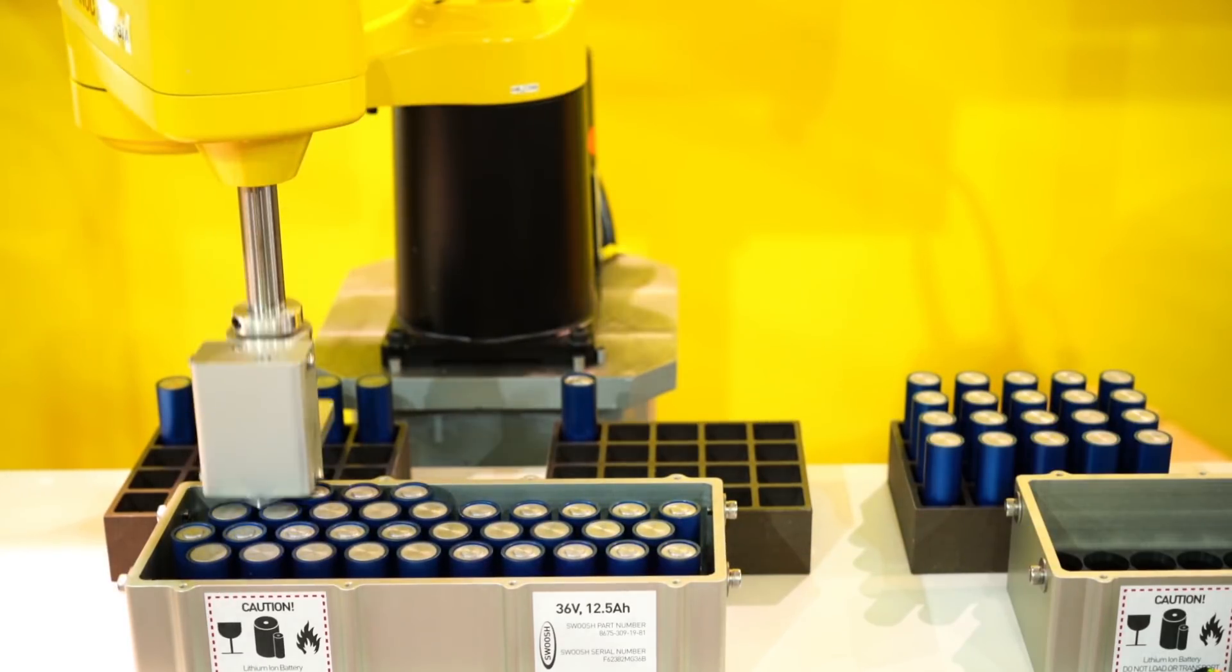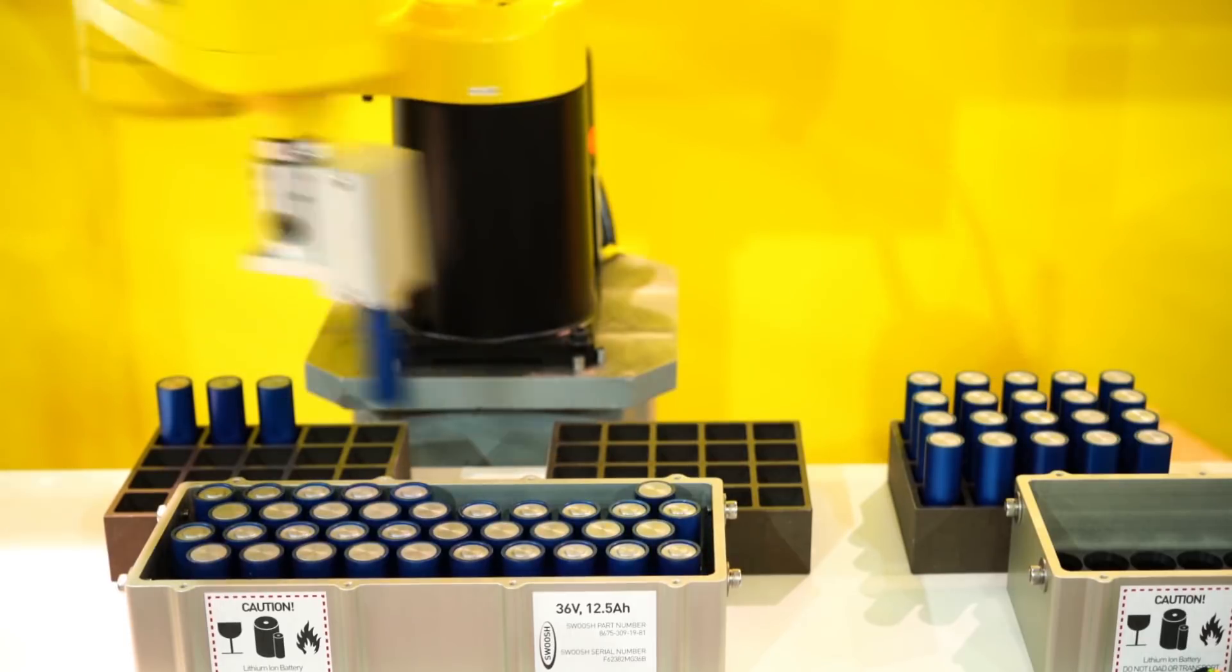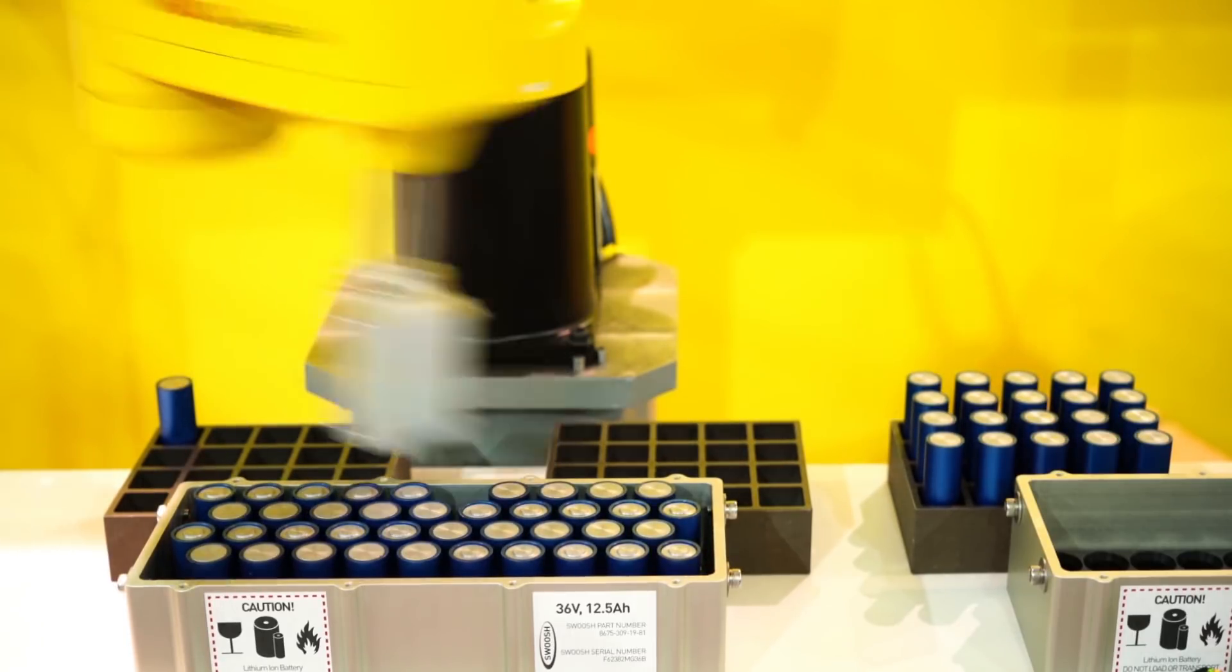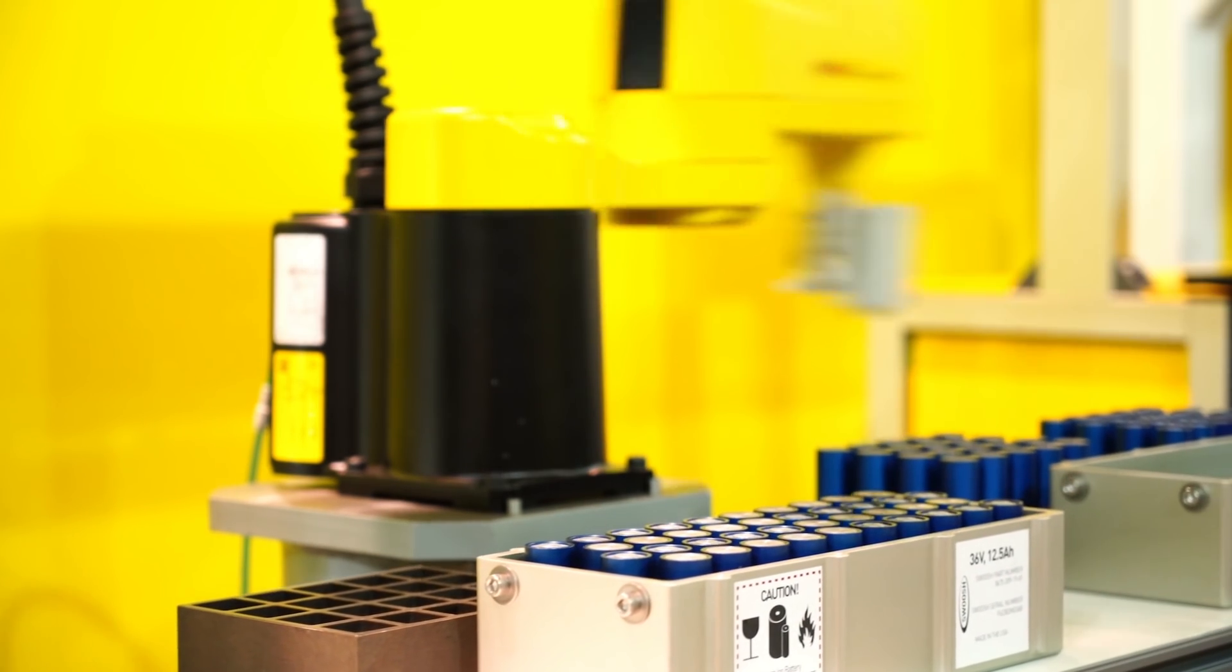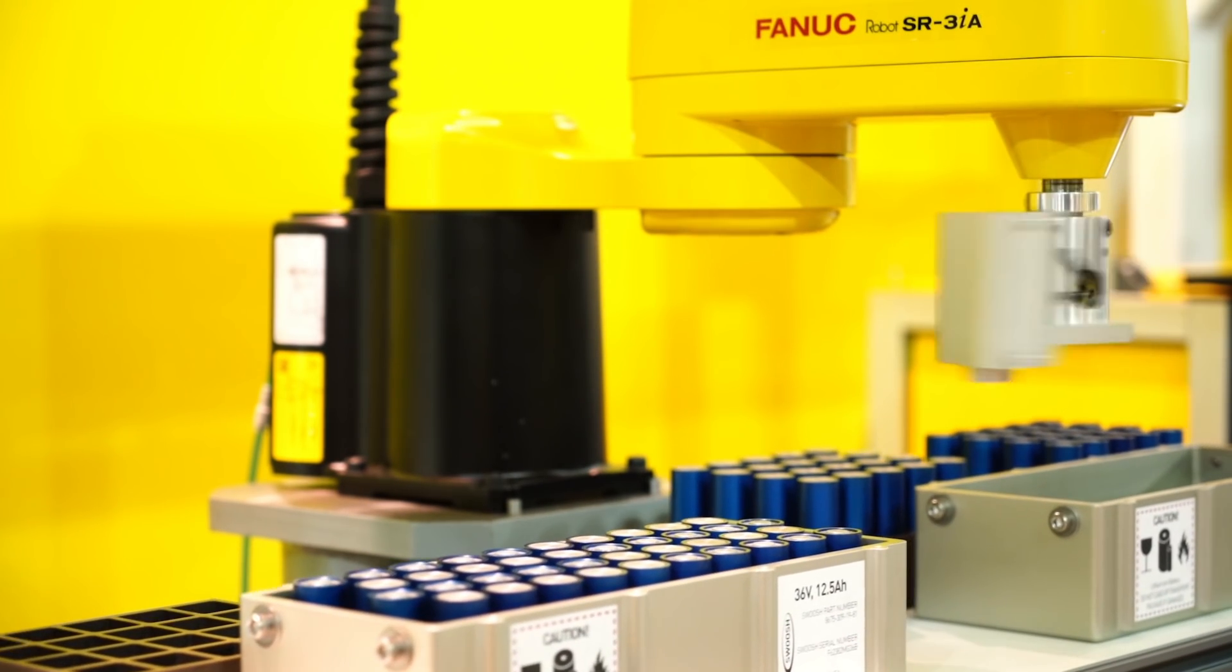Individual battery cells and an empty module travel into the robot's work area on a conveyor. The robot first uses FANUC iR Vision to locate the battery cells and empty assembly modules.